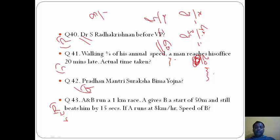Suppose A runs at 8 kilometers per hour and he runs 1 kilometer. So 1 by 8 is the time taken by A, that's 1 by 8 hour. Convert it into seconds: 60 times 60 by 8. This will be A's time.